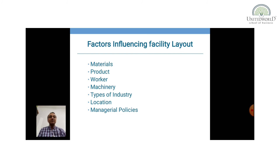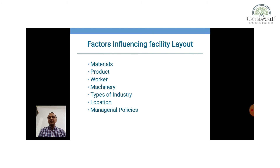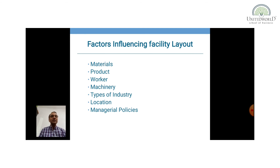Managerial policies are significantly important in influencing plant layout. The volume of production, provision for expansion, extent of automation, make-or-buy decisions, purchasing policy, and personnel policies all play a role. Top management determines plant layout objectives and the scope of plant activities, deciding what type of layout to have. To summarize, the key factors are: materials, products, workers, machinery, type of industry, location, and management policy.